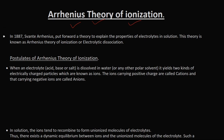In 1887, Svante Arrhenius put forward a theory to explain the properties of electrolytes in solution. This theory is known as the Arrhenius theory of ionization, or it is also called electrolytic dissociation.